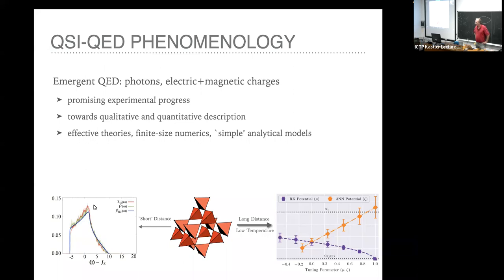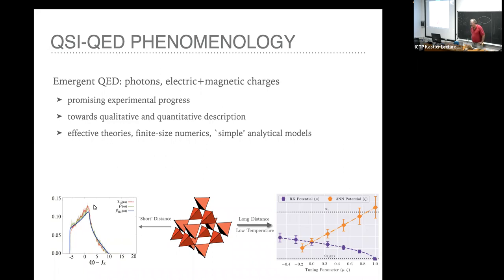You probably remember the Lamb shift goes as the fifth power of the fine structure constant. The question is: is there a solid-state analog of the Lamb experiment? In principle, it looks like just about every phenomenon in QED in principle exists here as well.